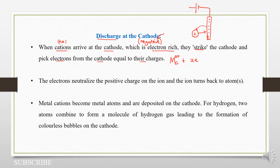So obviously, here it's in aqueous form. And then it will become an atom. We shall have something like this. So the cation will pick electrons at the cathode and will become discharged. M is an atom and it has no charge.